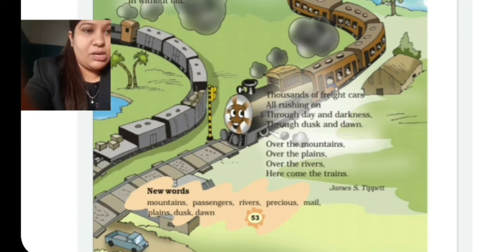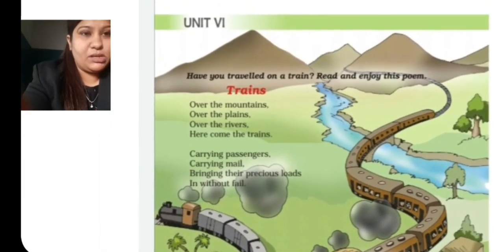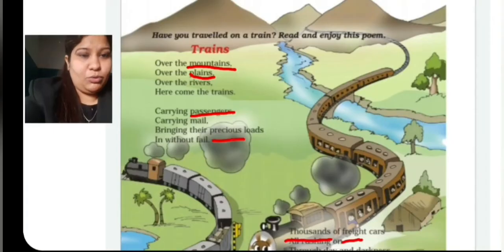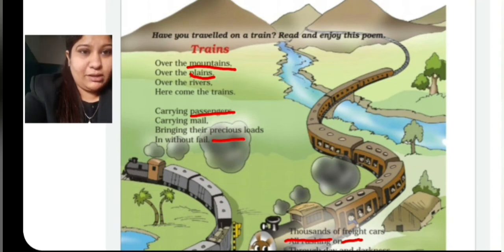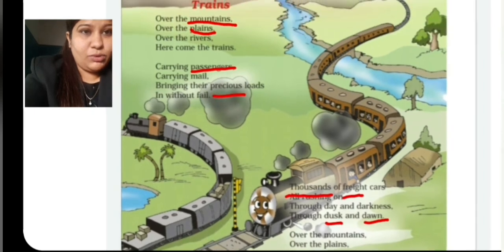This poem is written by James S. Tippett. Now I am giving you the hard words. The first word is 'mountains' — m-o-u-n-t-a-i-n-s. Then 'plains' — p-l-a-i-n-s. Then 'passengers' — p-a-double s-e-n-g-e-r-s. 'Precious' — p-r-e-c-i-o-u-s. 'Thousands' — t-h-o-u-s-a-n-d-s. 'Freight' — f-r-e-i-g-h-t. 'Dusk' — d-u-s-k. And 'dawn' — d-a-w-n. So these were the hard words.